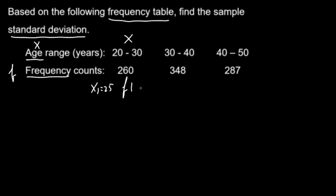F1 is 260, x2. 30 plus 40 is 70, 70 divided by 2, 35. x3, midpoint. 40 plus 50, 90. 90 divided by 2, 45. So, x2 is 35, F2 is 348. x3 is 45, F3 is 287.